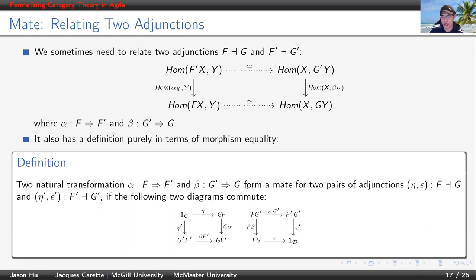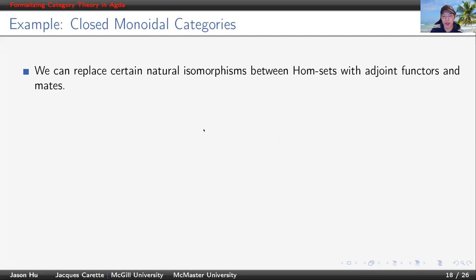So we want to replace it with something else, which is this definition. And in this definition, we replace this commutative diagram here with these two diagrams, small diagrams below here. And these two small diagrams are in, again, in the category of functors. So again, this definition involves nothing about universe levels or hom-sets.